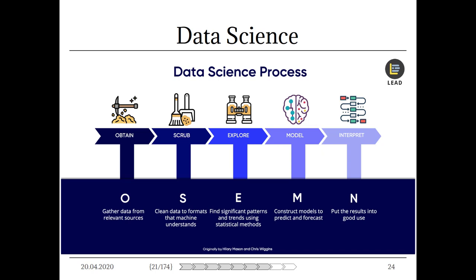Es gibt das OSAM-Framework: Obtain – ich sammle meine Daten; Scrub – ich bereinige die Daten in einer Art und Weise, dass ein Machine Learning Algorithmus damit arbeiten kann; Explore – ich schaue mir die Daten an, suche Trends oder Strukturen; dann gehe ich in die Modellierung, baue ein Modell für Prädiktionen und Vorhersagen; und dann nehme ich die Erkenntnisse aus diesem aufwendigen Prozess, um nutzbare, interpretierbare Ergebnisse zu erzeugen, mit denen man geschäftsrelevante Entscheidungen treffen kann.